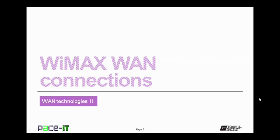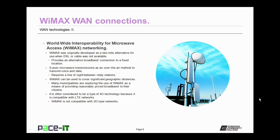WiMAX stands for Worldwide Interoperability for Microwave Access. WiMAX was originally developed as a last-mile alternative to use when DSL or cable was not available. It can provide an alternative broadband connection to a fixed location. It uses microwave transmissions as an over-the-air method to transmit voice and data, and it does require line-of-sight between relay stations. WiMAX can cover significant geographic distances, and many municipalities are exploring its use as a means of providing reasonably priced broadband to their citizens without having to wire every household. WiMAX is often considered a type of 4G technology because it is compatible with LTE networks.